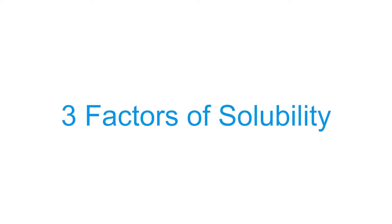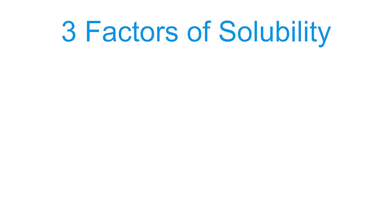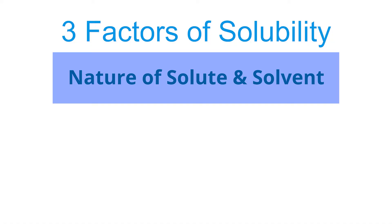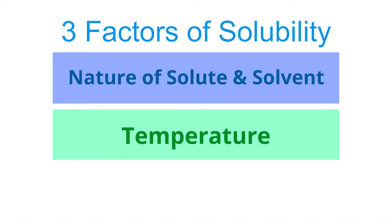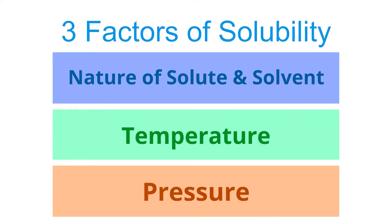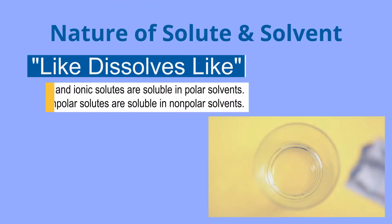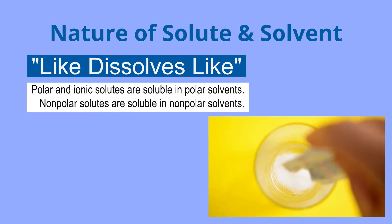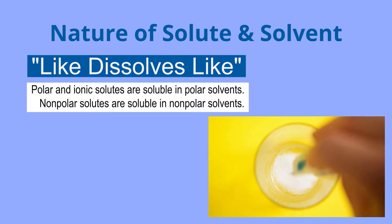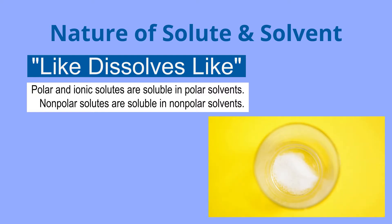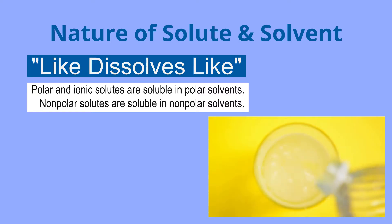There are three factors that affect solubility: the nature of solute and solvent, temperature, and pressure. The general rule in solubility is like dissolves like. Polar and ionic solutes are soluble in polar solvents, while non-polar solutes are soluble in non-polar solvents.